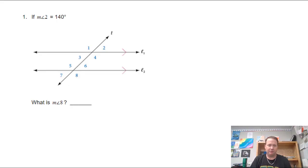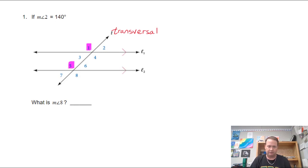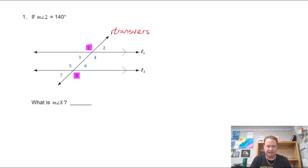We're looking at parallel lines today. The beauty about parallel lines is when they get cut by a transversal — that's line T — you create eight angles and they all have special relationships. For example, we have corresponding angles, which are in the same place. We have alternate interior angles, which are equal and on opposite sides of the transversal in the interior. We also have alternate exterior angles on the outside and opposite sides, and same-side interior angles, which are supplementary.